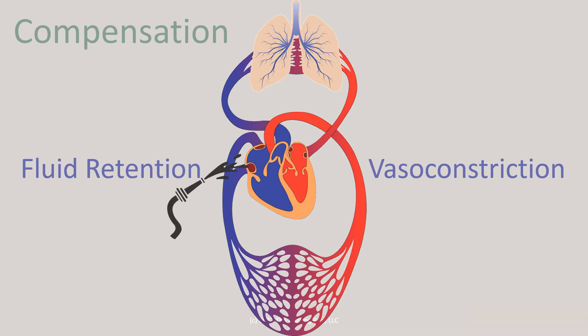Our compensatory mechanisms — fluid retention and vasoconstriction — are similar to having a fire hose. We're trying to drink from the fire hose on the right side of the heart, and on the left side it's like we put a clamp on the vasculature. The heart is already injured, and now we're pouring more fluid into it while clamping the arterial system so it's harder to pump. These compensatory mechanisms that occur in heart failure really don't help.